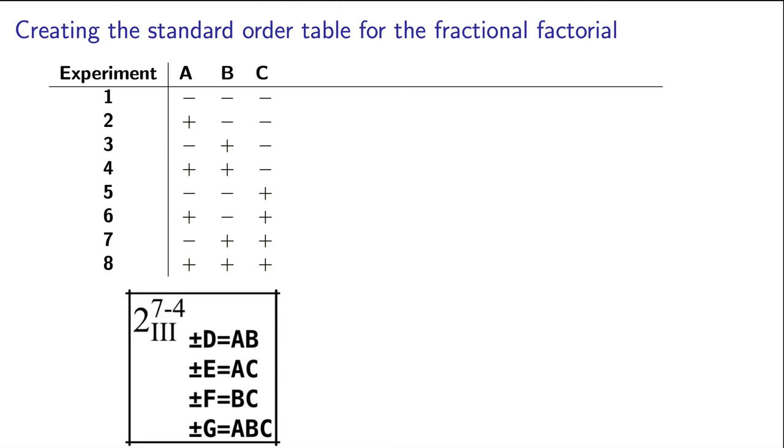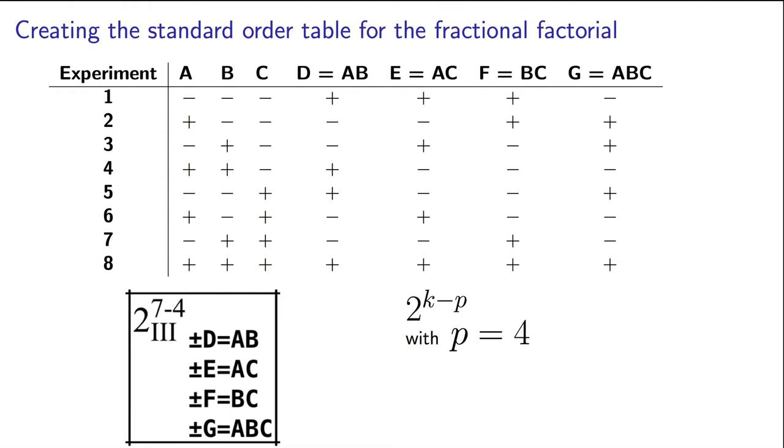With eight experiments, we have factors A, B and C to form a full factorial in eight rows. The trade-off table tells us to generate factors D, E, F and G. Now, notice that this is a 2 to the 7 minus 4 design. So this design has P equal to 4. These four generators can be used to form the columns for the remaining factors in my system. And here's the completed table.